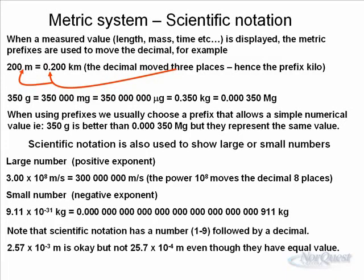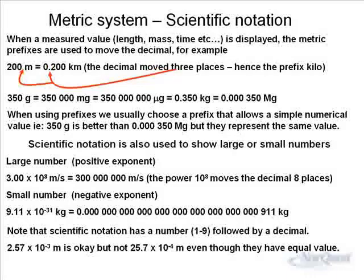You always have scientific notation with a single digit, one to nine, followed by a decimal, and then any more numbers that you want to put. So 2.57 × 10^-3 meters is okay, but you wouldn't write a number usually in this form, 25.7 × 10^-4. They mean the same thing, but one is accepted form, the other one is not really accepted. Although many people use it, it's really not scientific notation.